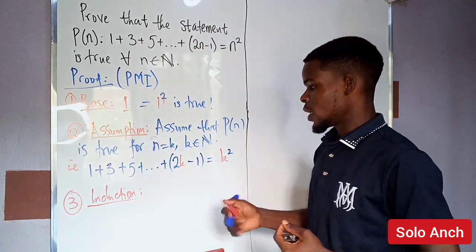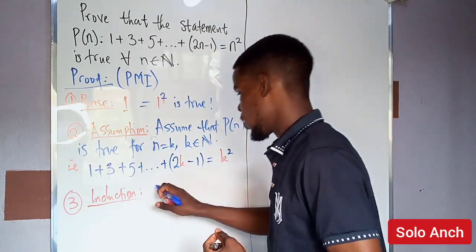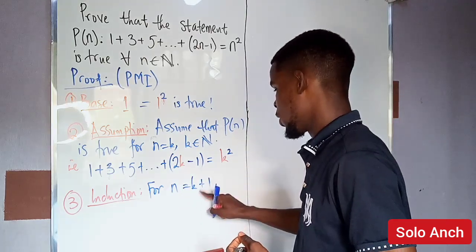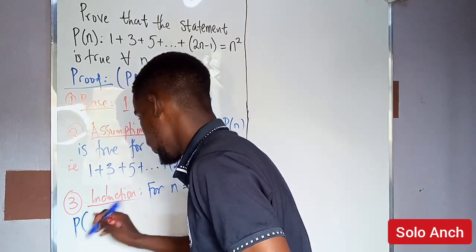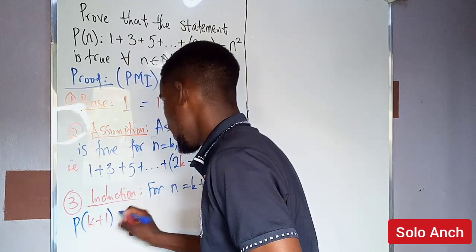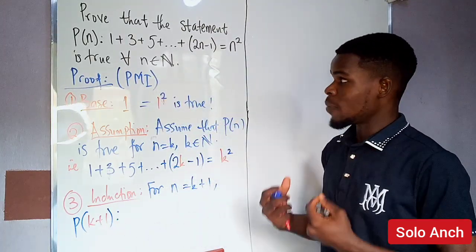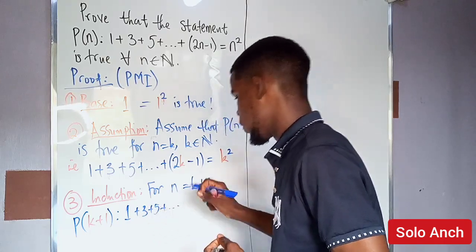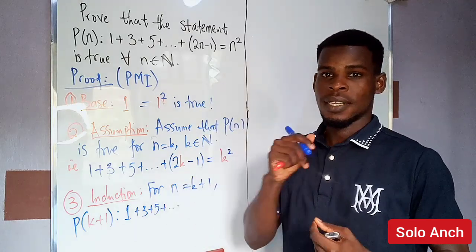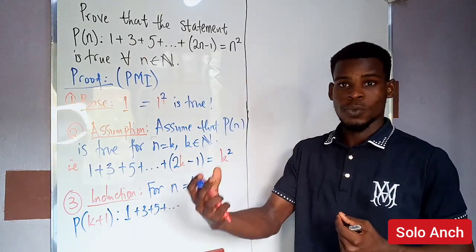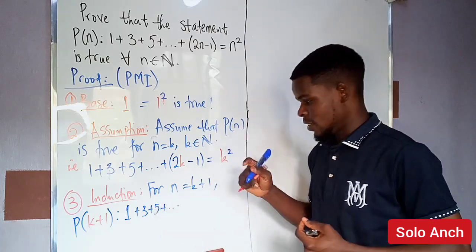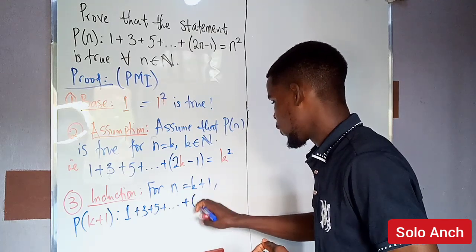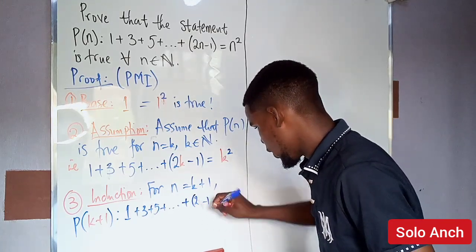So we check what happens when n equals k plus one. For P(k+1), we are adding k plus one odd natural numbers together: one plus three plus five and so on. Since k plus one comes just after k, we will first reach the kth odd number, which is 2k minus one.